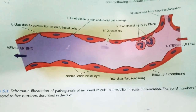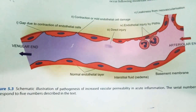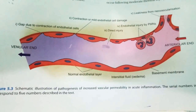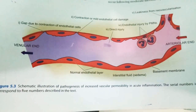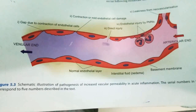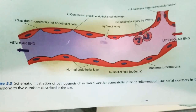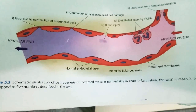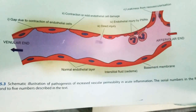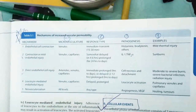The first pattern is a gap created due to contraction of endothelial cells. The second is contraction or mild endothelial cell damage. The third is due to direct injury. The fourth is endothelial injury by PMNs — polymorphonuclear cells. The fifth involves leakiness from neovascularization.